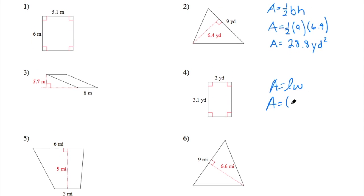For a rectangle, area is length times width. It doesn't matter which is which, 2 and 3.1. We're going to multiply those together to get 6.2 yards squared. So we've done a triangle, we've done a rectangle.